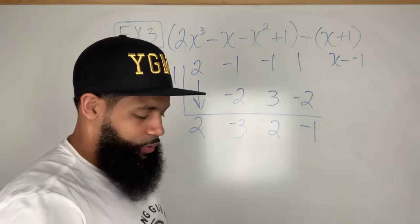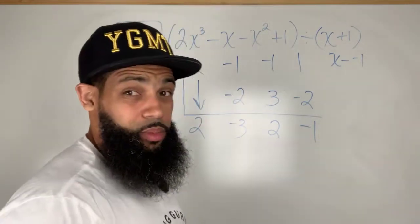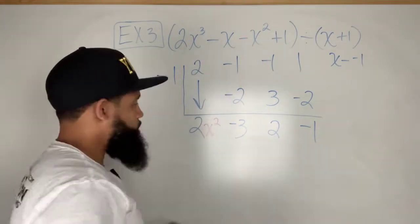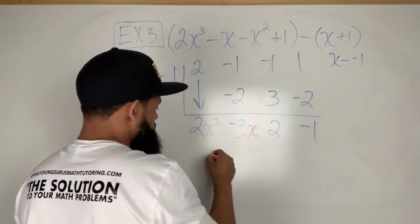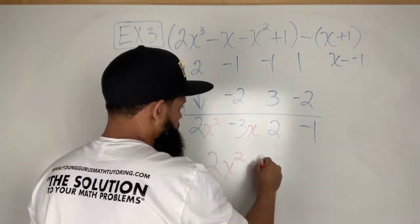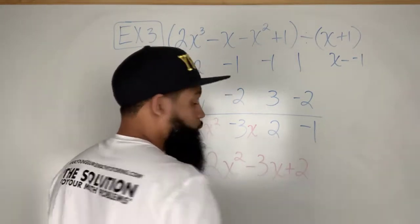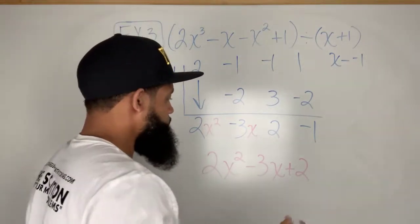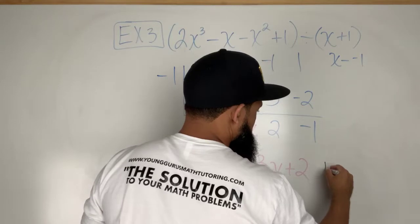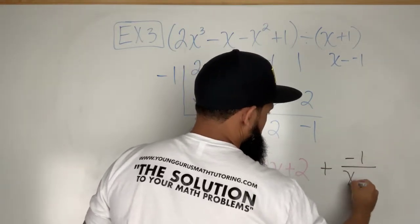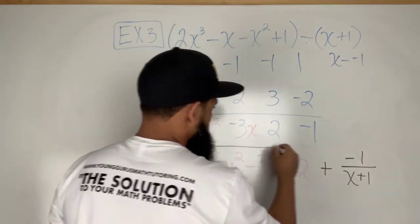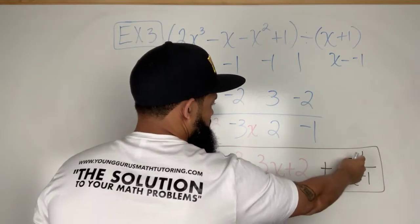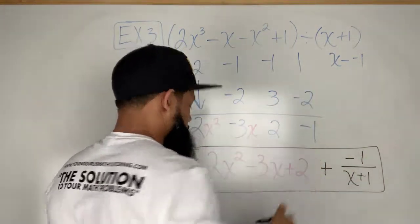So now when I do these, I have to actually write the coefficients. Here the degree is 3, so this needs to be to the second power. This needs to be x, and then this is 2. So our quotient is actually 2x squared minus 3x plus 2. We also have a remainder here. I'm going to say plus negative 1 over x plus 1. I have to write that remainder as a fraction. So everything else is still the same, but then I take this last number, the remainder, and I put negative 1 over my original divisor.